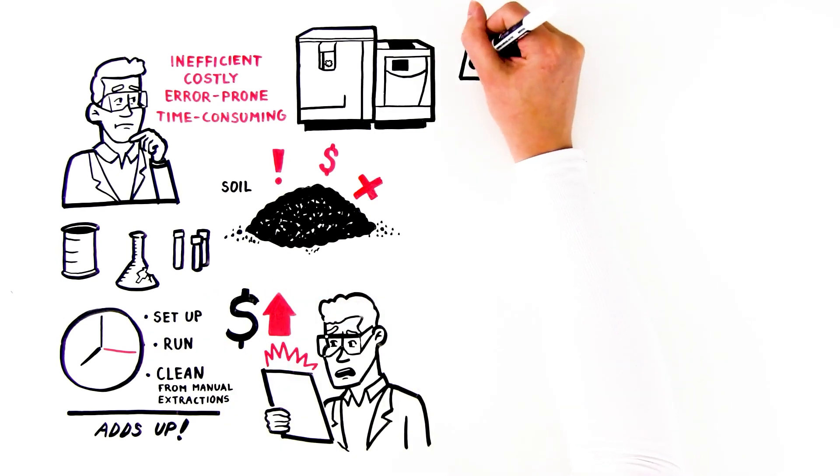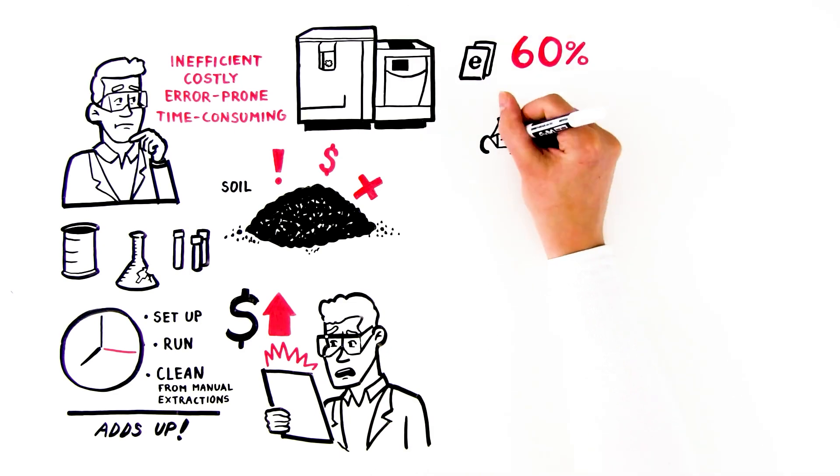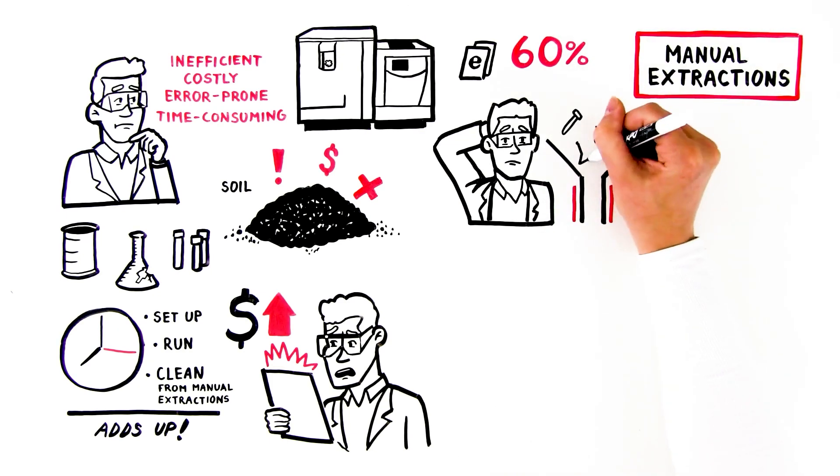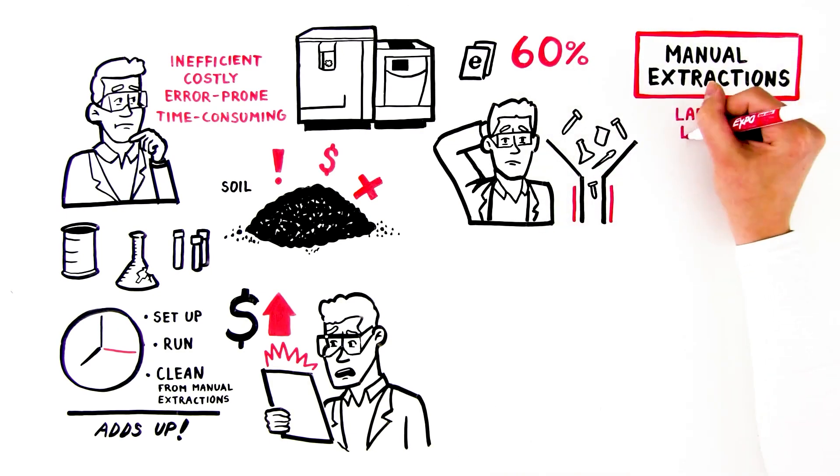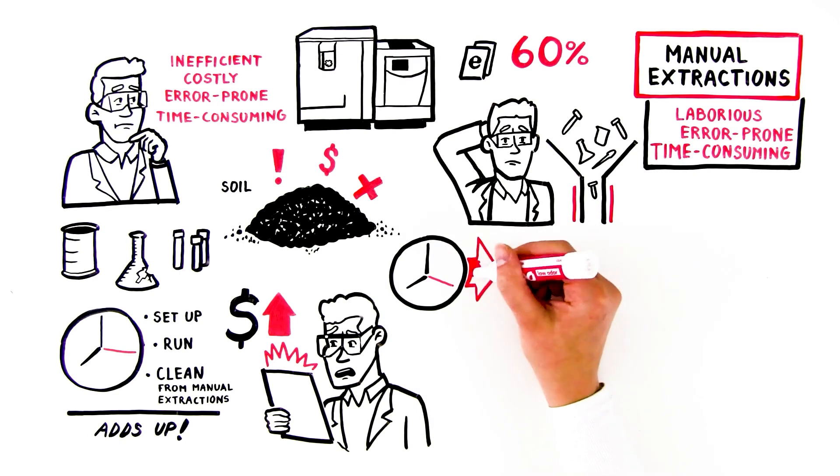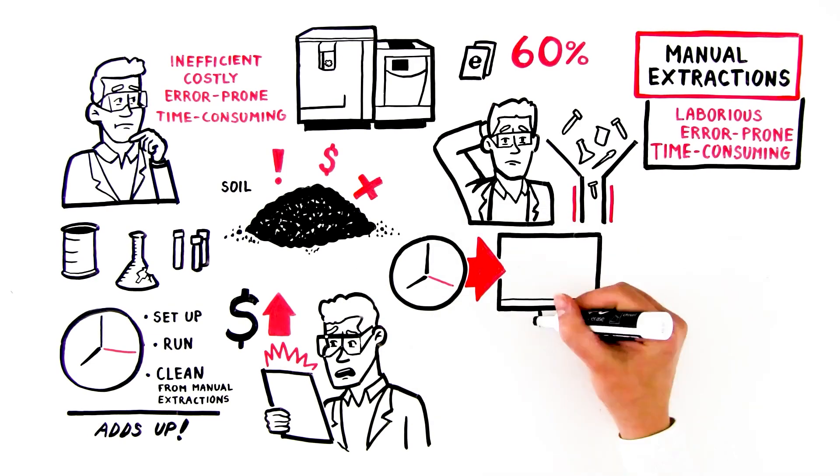It's estimated up to 60% of an analytical chemist's working time can be dedicated to manual extractions, which creates a bottleneck in sample processing. This process is laborious, error-prone, and time-consuming—time that could be more wisely spent on higher-priority tasks such as data analysis.